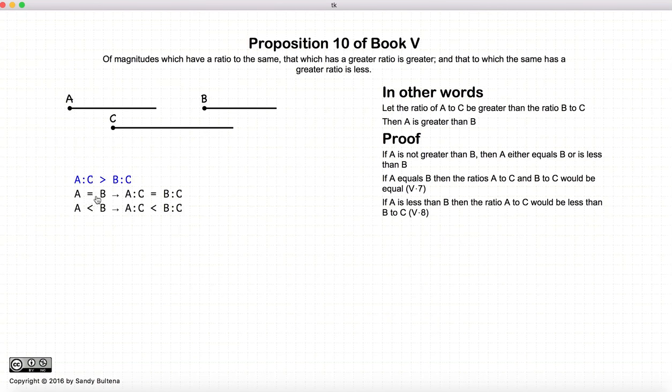So if A is equal to B gives us something inconsistent, A is less than B gives us something inconsistent, the only other option we have is that A is greater than B. So again, by this proof, we want to prove that A is greater than B. So we do it by contradiction by saying, assume it's equal to, assume it's less than, come up with a contradiction, so therefore it must be greater than.